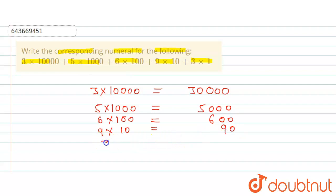3×1 equals 3. Now we will add all these: 30,000 + 5,000 + 600 + 90 + 3 equals 35,693. This is the numeral form of the expanded form. This is the final answer for this question. Thank you.